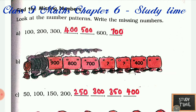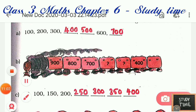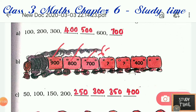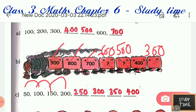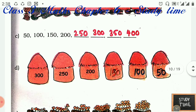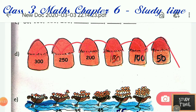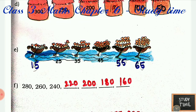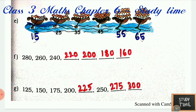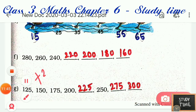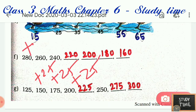Next pattern: 900, 800, 700, 600, 500, 400, 300 — subtract 100 each time. Next: 500, 150, 200, 250, 300, 350, 400 — add 50. Next: 300, 250, 200, 150 — subtract 50. Then: 15, 25, 35, 45, 55, 65 — add 10. Then: 280, 260, 240, 220 — subtract 20. Then: 125 — add 25 each time. Here subtract 20 for each number.